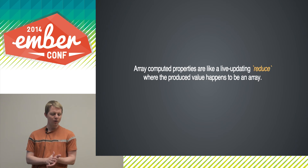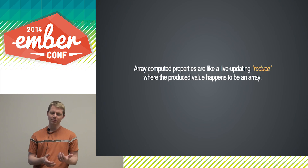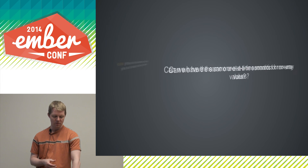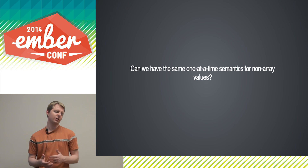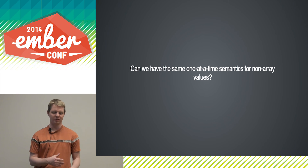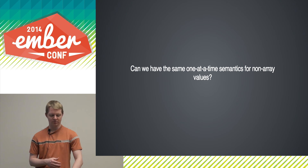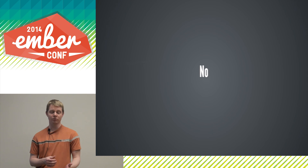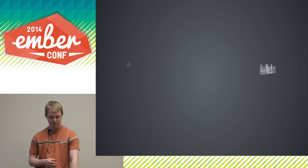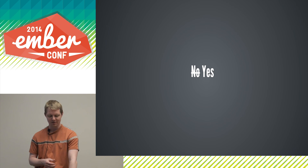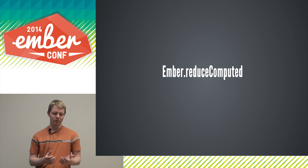Array computed properties are a little bit like a reduce from a functional programming point of view, where the produced value just happens to be an array. But can we have one-at-a-time semantics where the computed value is not an array? The answer is yes — it doesn't have to be arrays. Enter Ember.reduceComputed.